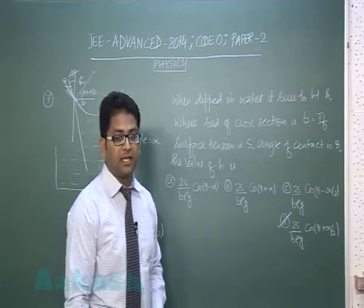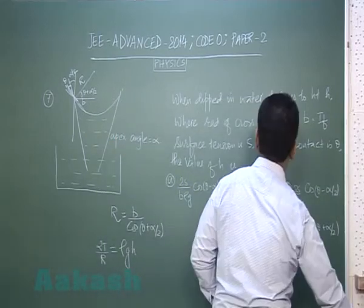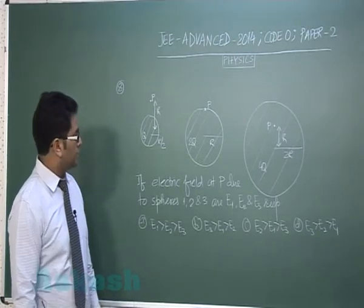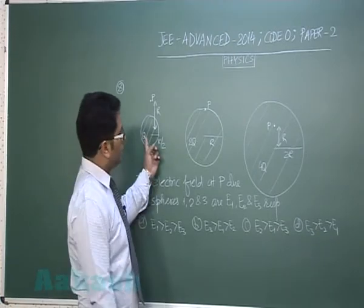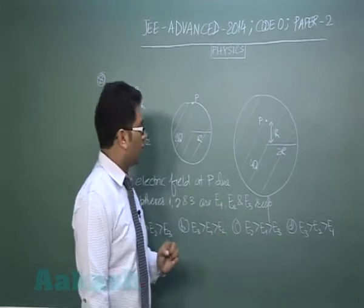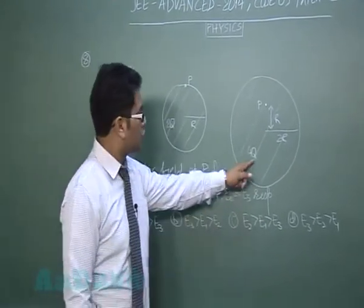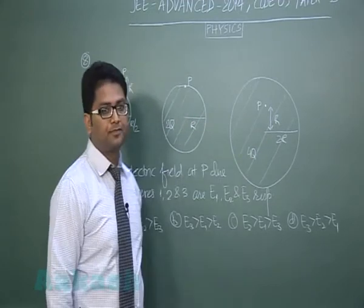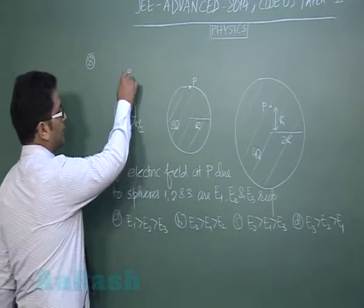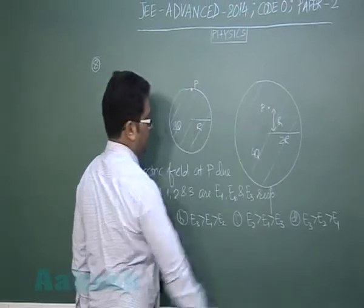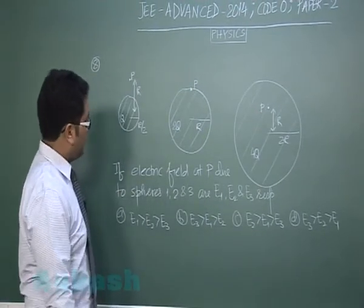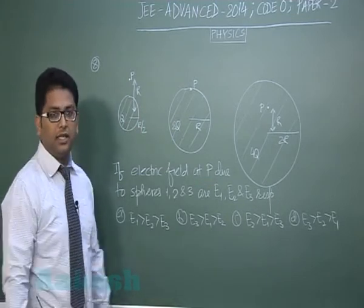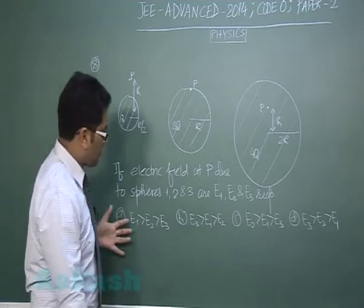Let's go to question number 8 now. Question number 8 is from electrostatic. Three uniformly charged solid spheres are given, charges are shown, the radii r by 2, r and 2r, and there are three points p which respectively are given. If electric field at p due to these three are e1, e2 and e3, we got to rank them.